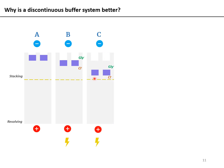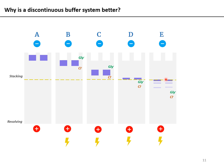Once the samples have completely entered the gel from the well, the entire protein sample has been stacked into a thin, fine layer and all proteins now enter the resolving gel simultaneously. This ensures that all proteins face the same time duration of retardation from the resolving gel. The glycine and chloride fronts then migrate out of the gel, and the proteins are resolved on the basis of their molecular weight.